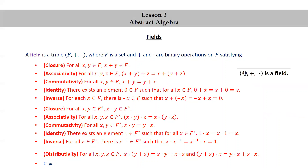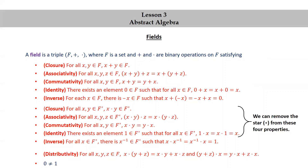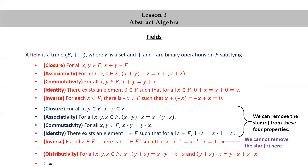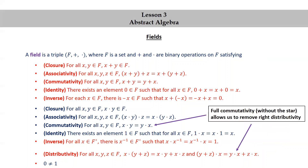Our primary example so far of a field is the set of rational numbers. The set of rational numbers together with addition and multiplication is a field. We can remove the star from four of the five properties, but we cannot remove the star from the multiplicative inverse property because 0 is not allowed to have a multiplicative inverse. Full commutativity allows us to remove right distributivity because it follows from left distributivity together with commutativity.